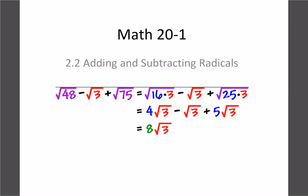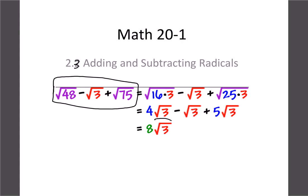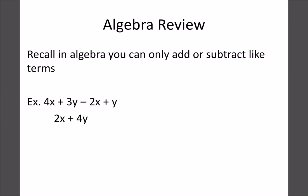We spent the last few days looking at converting radicals from mixed to entire radicals. Now we're going to move on and start looking at doing operations with these. Today we're going to look at adding and subtracting, and then the next lesson we'll do some multiplying and dividing. Here's an example: √48 - √3 + √75 — we can actually combine those and get an answer of 8√3.